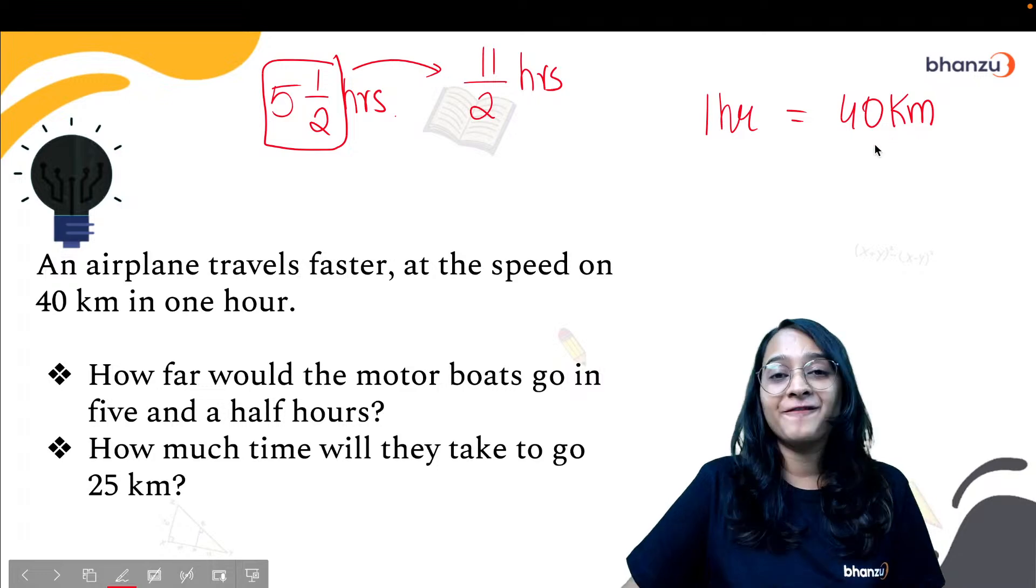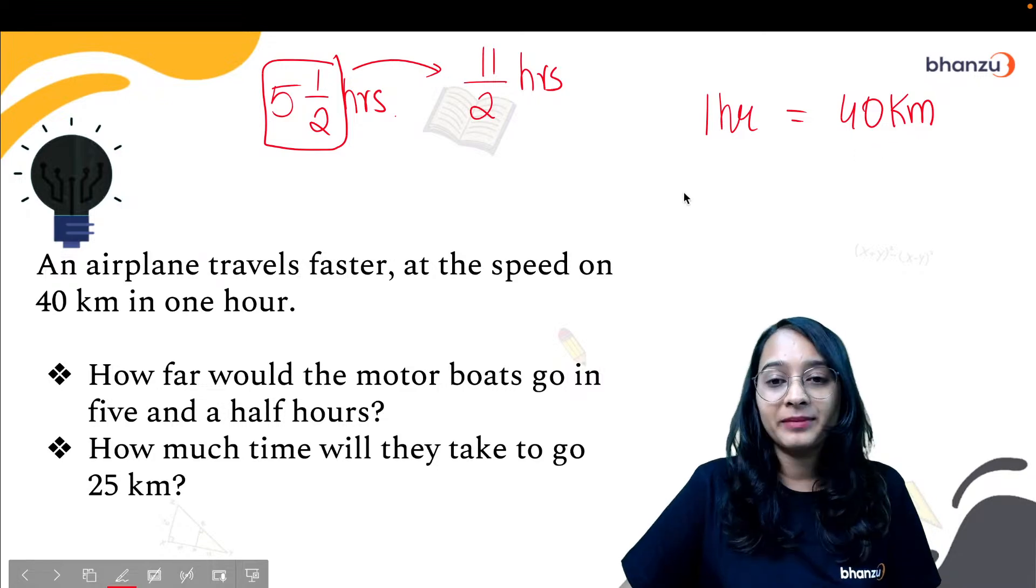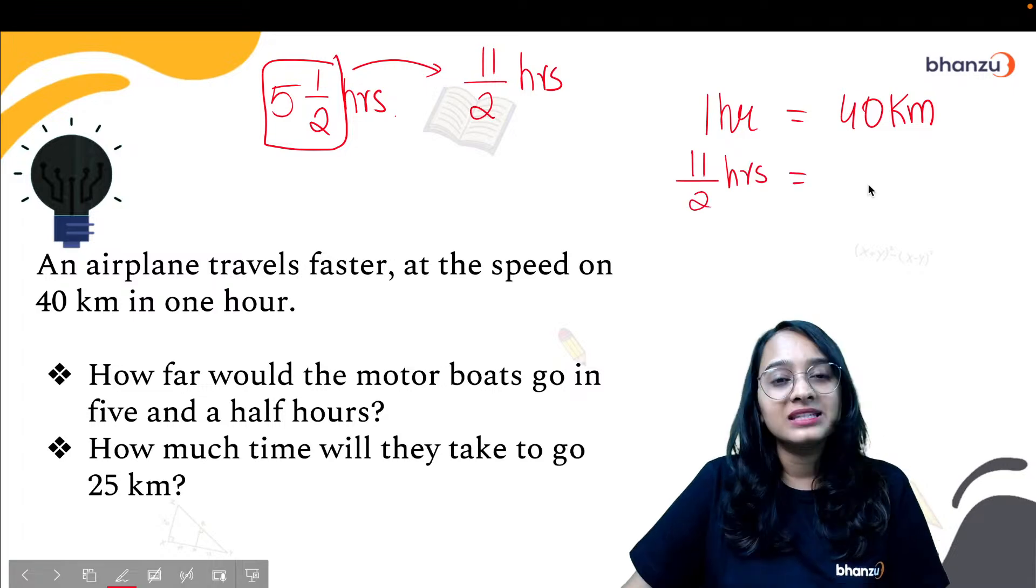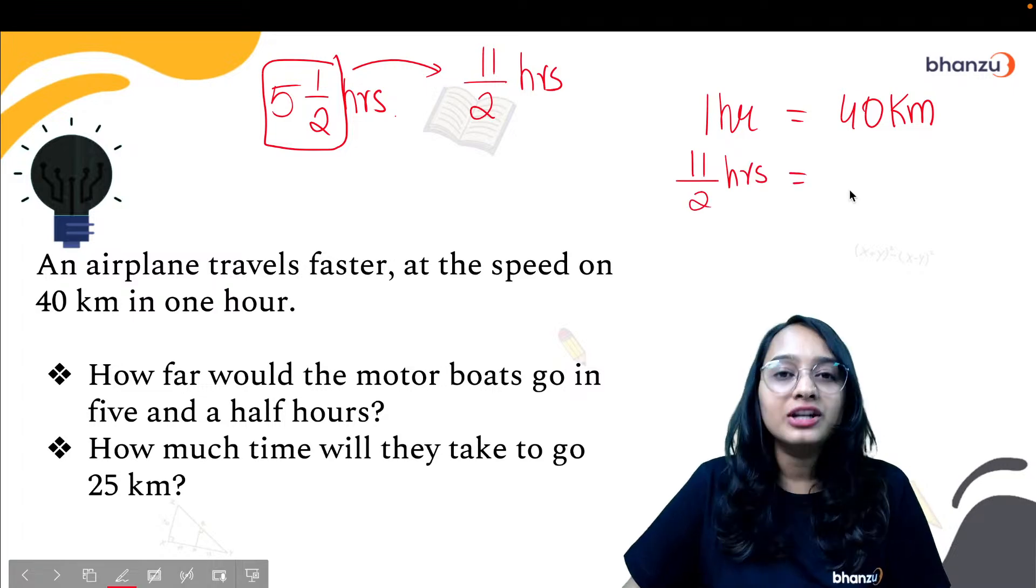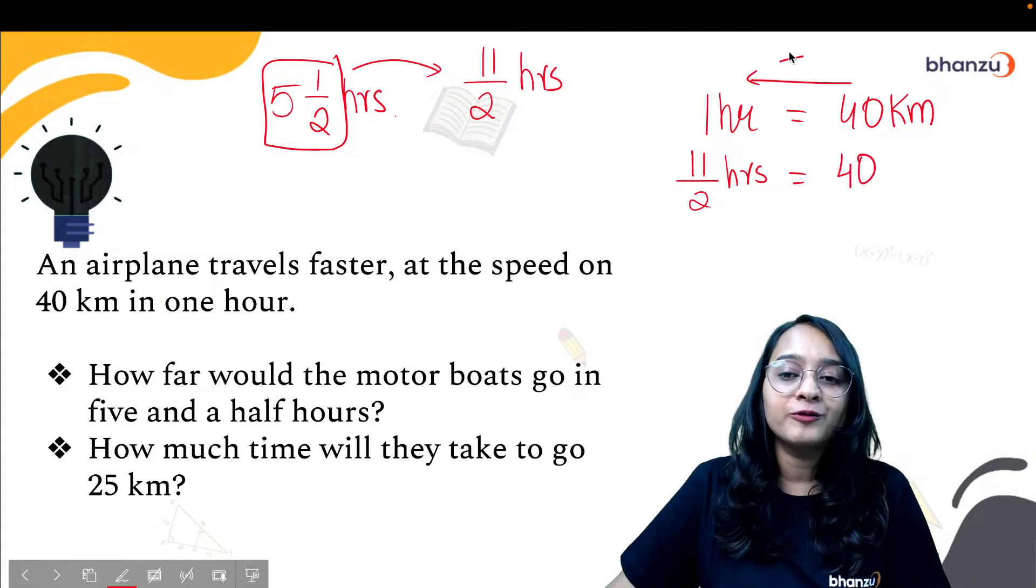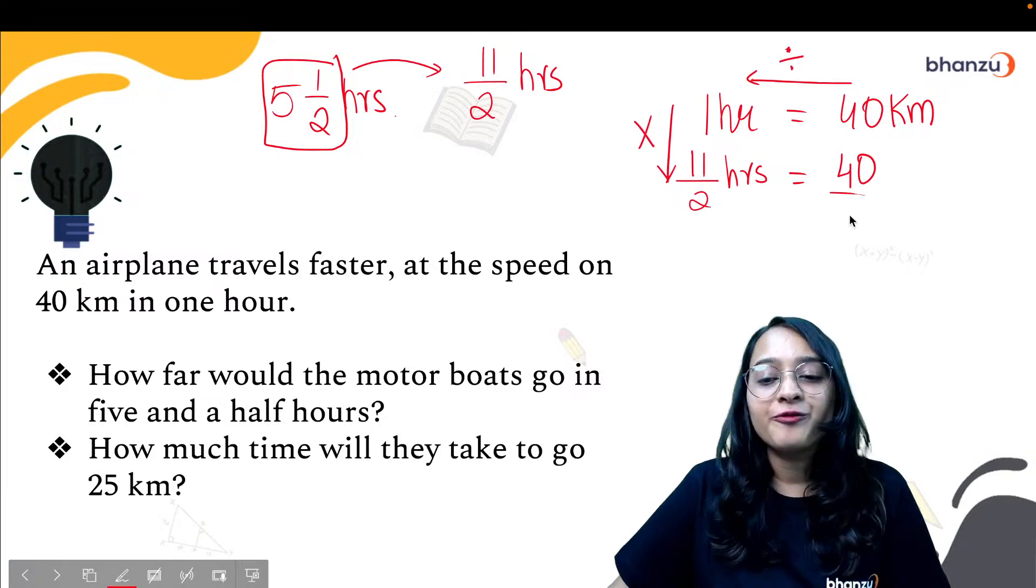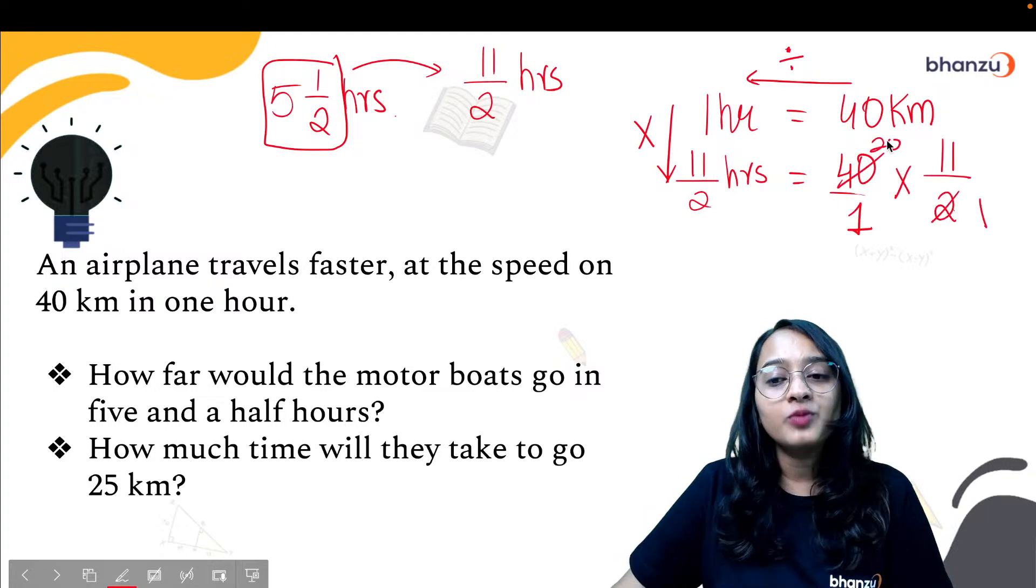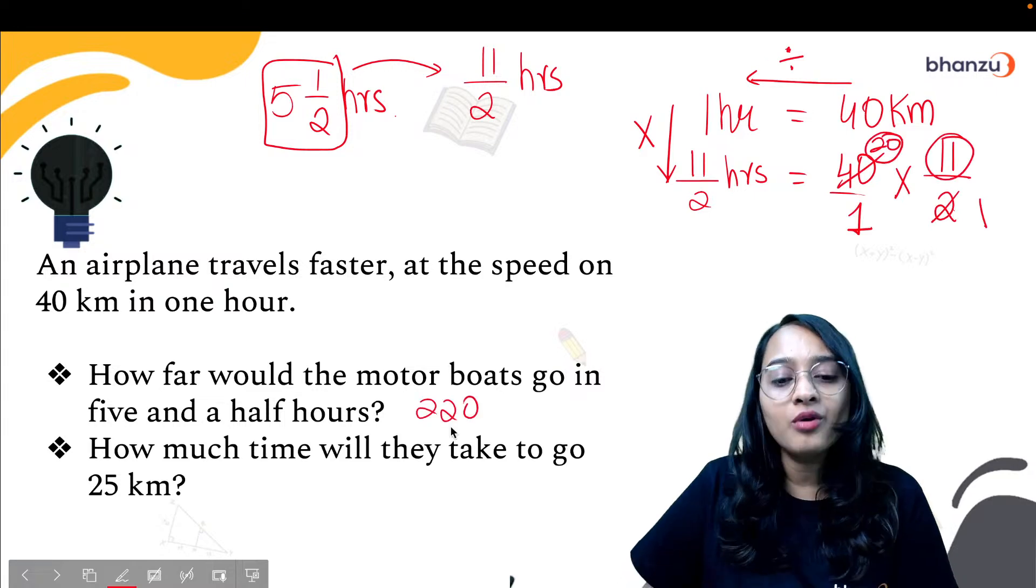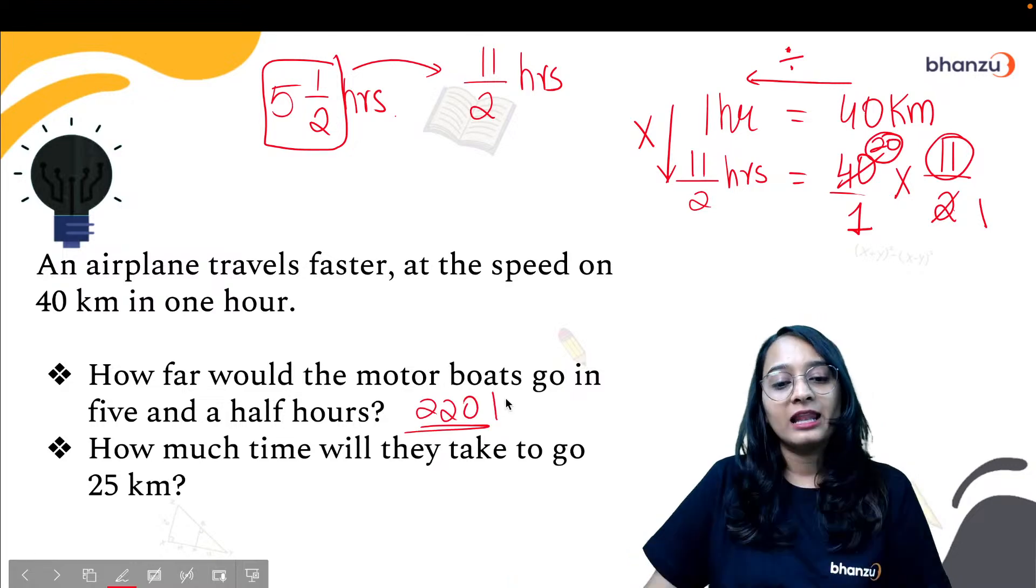So now for one hour it's taking 40 kilometers. So in 11/2 hours how much distance will it travel? So it will be 40 divided by 1. As you move towards the left you divide, as you come down you multiply. So 40 divided by 1 multiplied by 11/2. 2 into 20, so 20 into 11 is going to give you 220 kilometers.